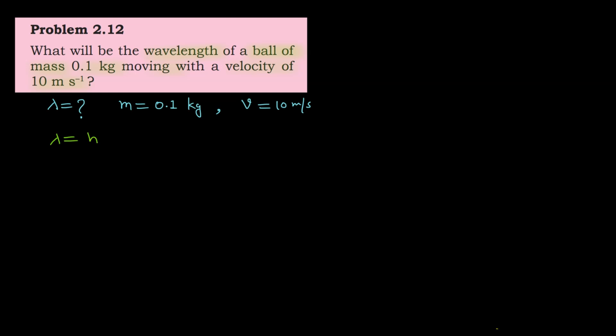Lambda equals h upon mv. Putting the values: lambda equals h, where h is Planck's constant 6.626 into 10 to the power minus 34 joule second, divided by mass 0.1 kg and velocity 10 meter per second.